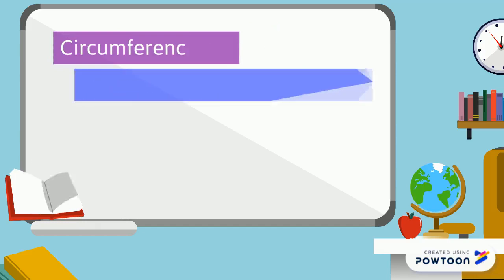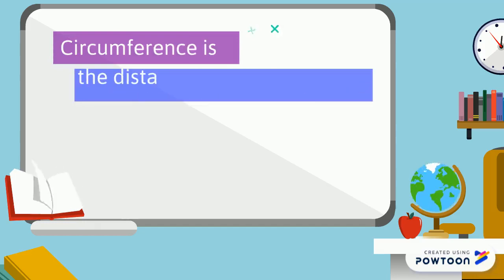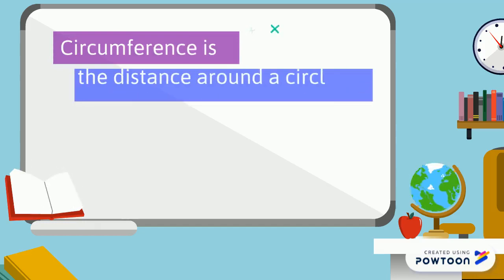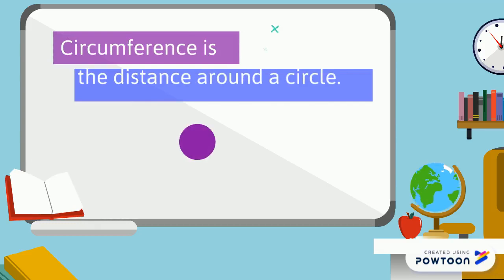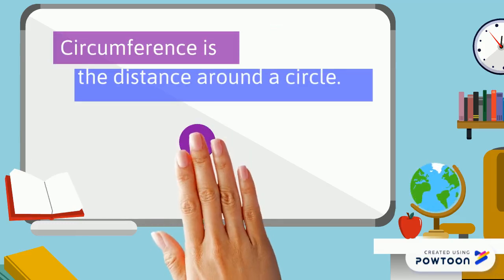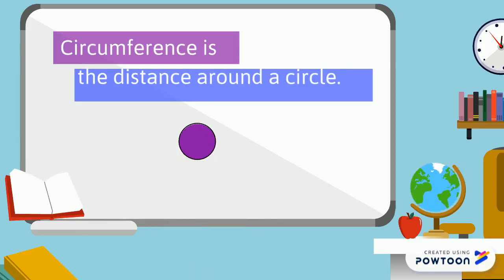Now a simple way to find circumference is: I could take a circle and a piece of string, wrap the string all the way around my circle, then lay the piece of string flat and use a ruler to measure that.